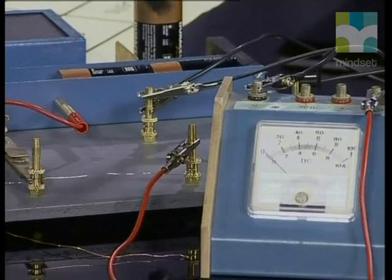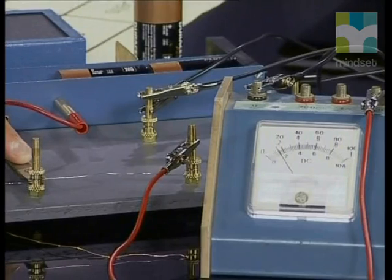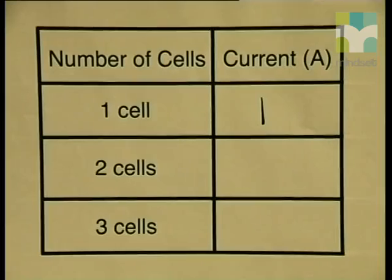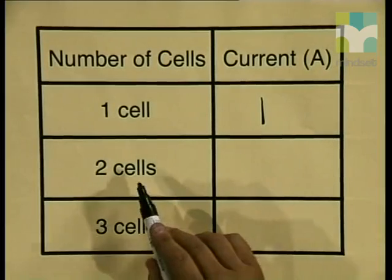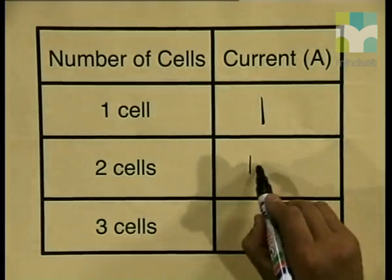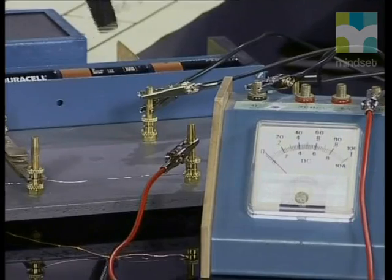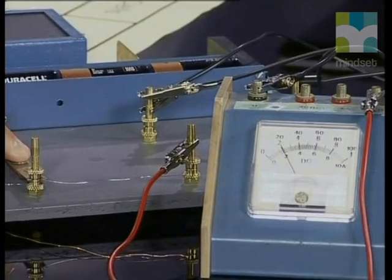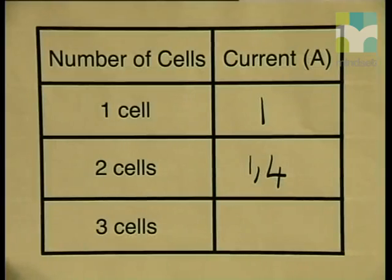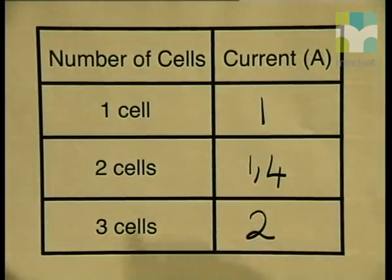Now I have placed two cells into my electrical circuit. Closing the switch, I get a reading of approximately 1.4 amperes — so two cells gives us a reading of approximately 1.4 amperes. With three cells in my electrical circuit, closing the switch, the reading is 2 amperes. Three cells gives us a reading of 2 amperes.